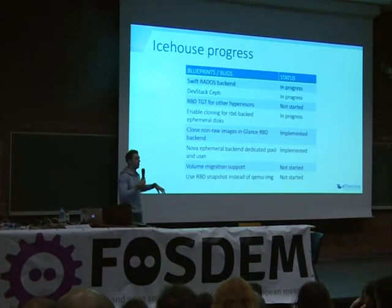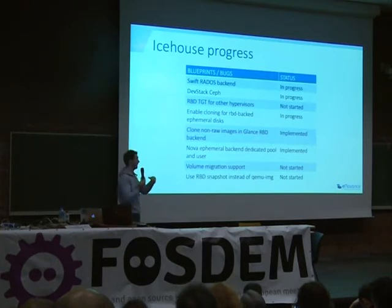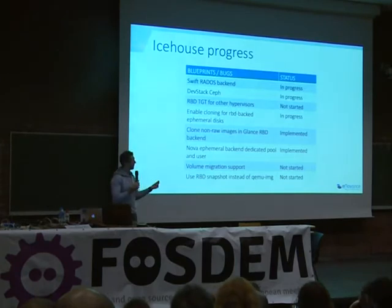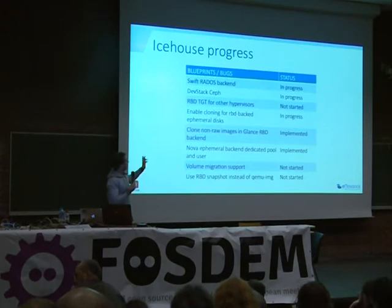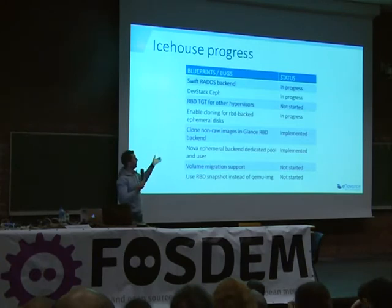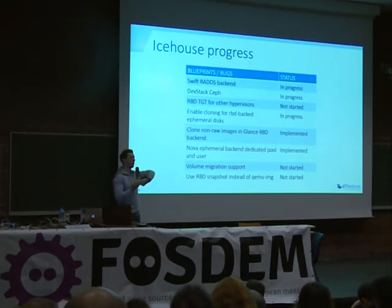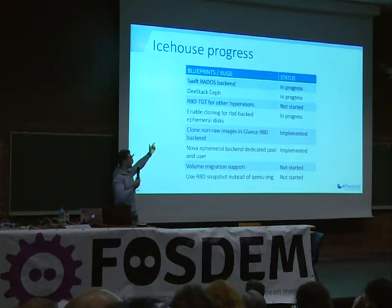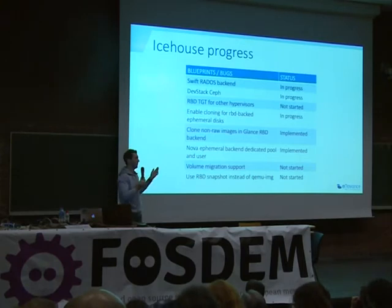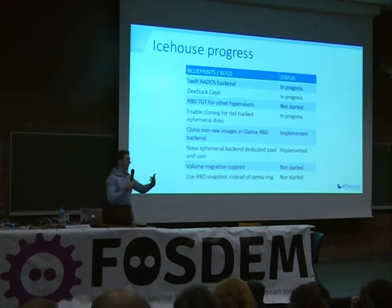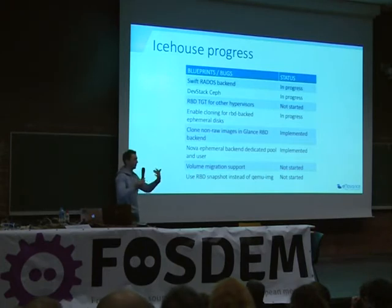OpenStack supports several hypervisors — Xen, KVM, but also proprietary hypervisors like VMware and Hyper-V. VMware relies mainly on iSCSI. There is an implementation that exports RBD blocks through TGT — you can use this implementation and map an iSCSI target, and under the hood it's just an RBD block. So we could implement this for VMware and make VMware virtual machines run under Ceph.